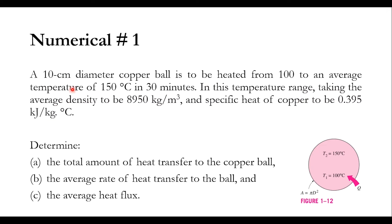What we need to determine: number one, the total amount of heat transferred to the copper ball in moving its temperature from 100 to 150 degree centigrade; number two, the average rate of heat transfer to the ball; number three, the average heat flux, where along with time, area will also be involved as per our previous theoretical knowledge.